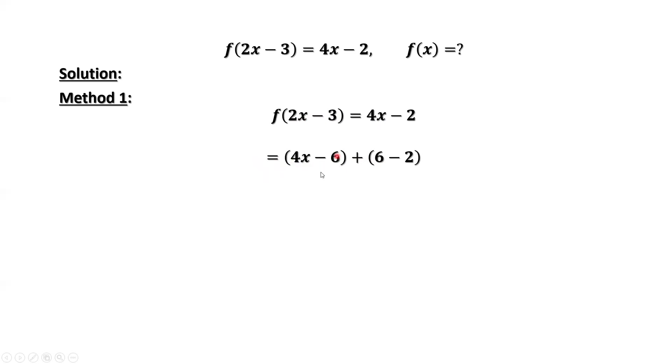The first part, we can factor 2 out. 2 times 2x minus 3. 6 minus 2, that's 4.